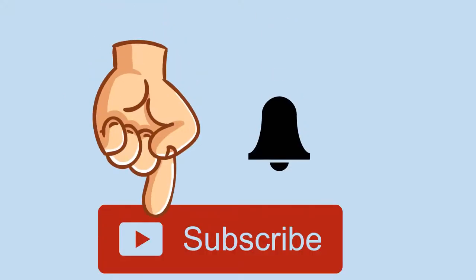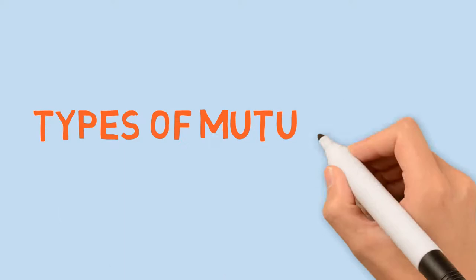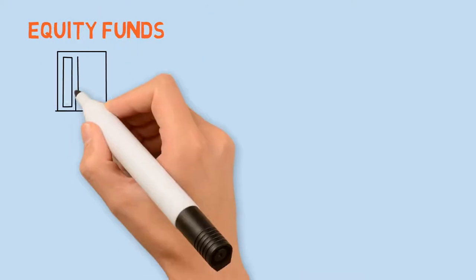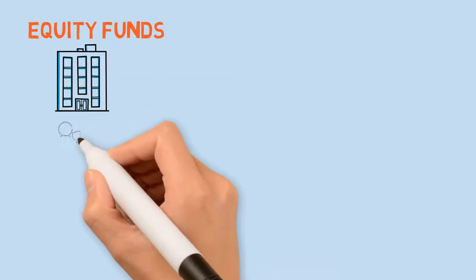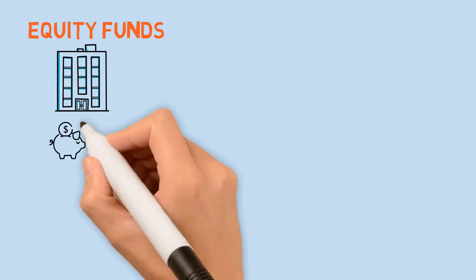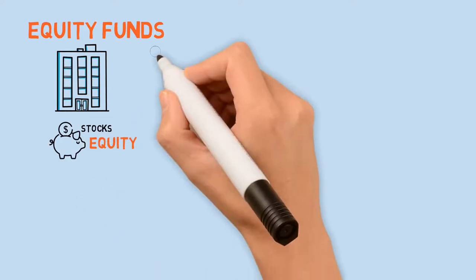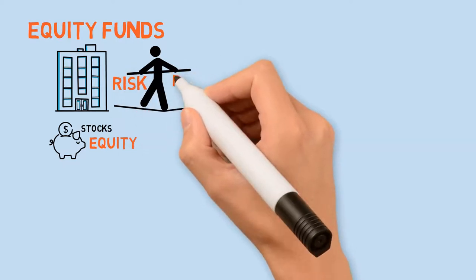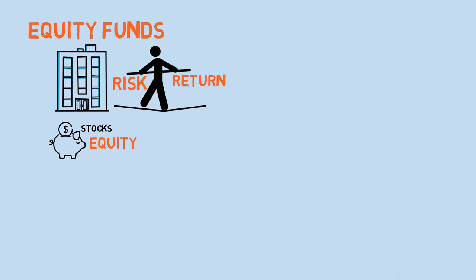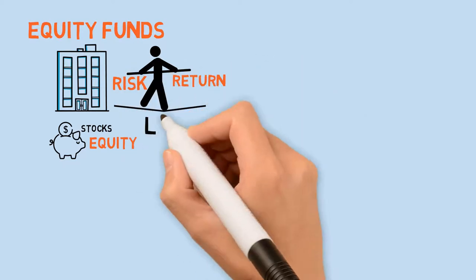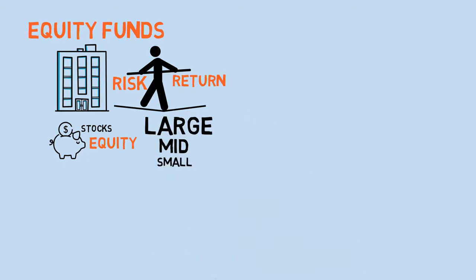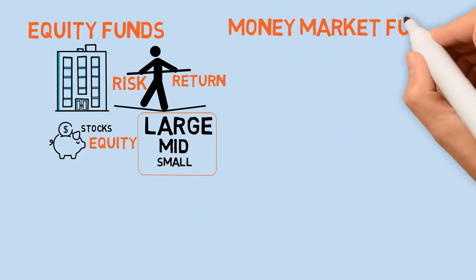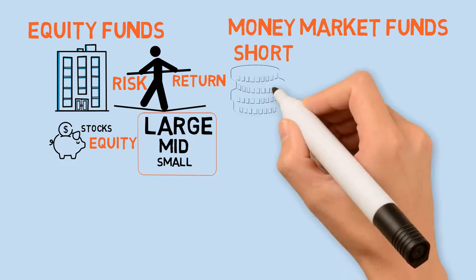In this video, we are going to understand the types of mutual funds. First, equity funds — these funds invest in stocks and predominantly equity. They are usually associated with the highest risk and the highest return. One can select from an option of large cap, mid cap, or small cap, or a combination of these.